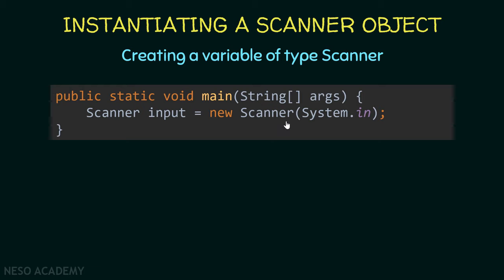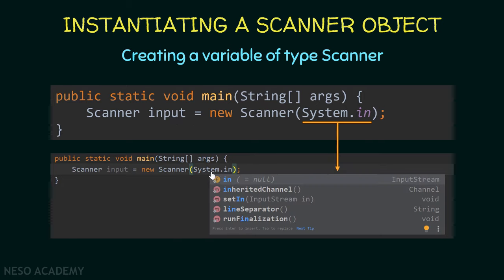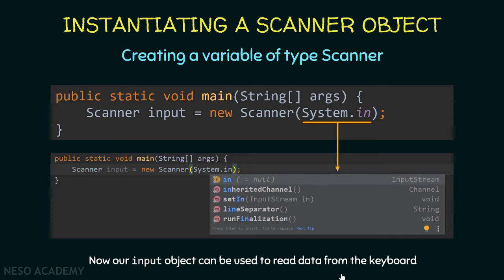This is the constructor of the Scanner class, and we pass System.in as a parameter. We are creating an object that reads data from System.in. System.in points to the keyboard — you already know System.out which points to the screen; we also have System.in which points to the keyboard. System.in is a static field of the System class, and its type is InputStream. Now our input object can be used to read data from the keyboard.